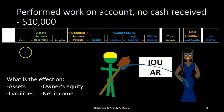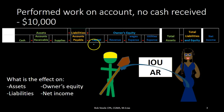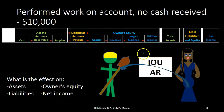Assets include cash, accounts receivable, and supplies. Liability accounts include accounts payable, which is the main one we'll be focusing on. The owner's equity section includes the capital accounts as well as the entire income statement — including revenue and expenses such as wages expense and utilities expense.